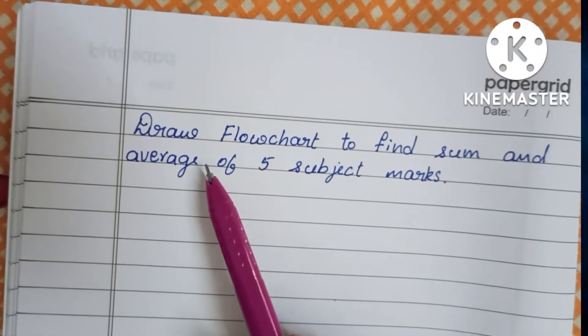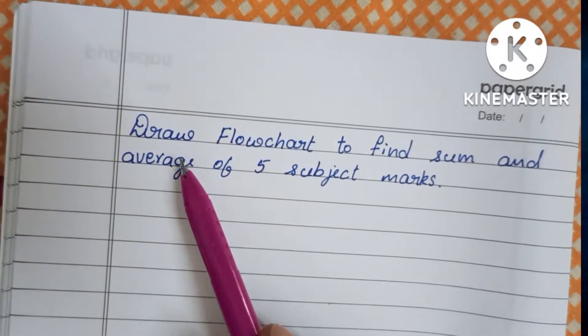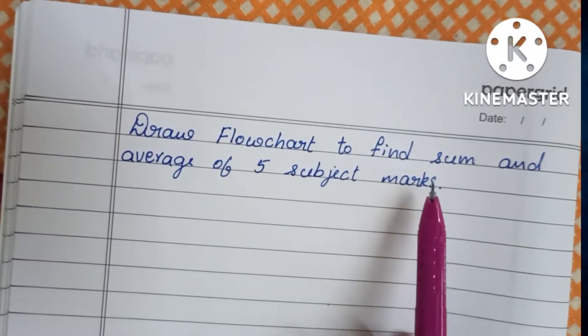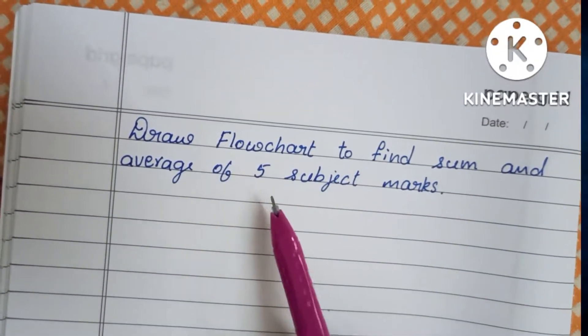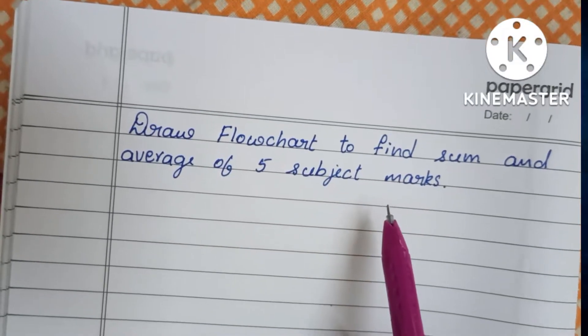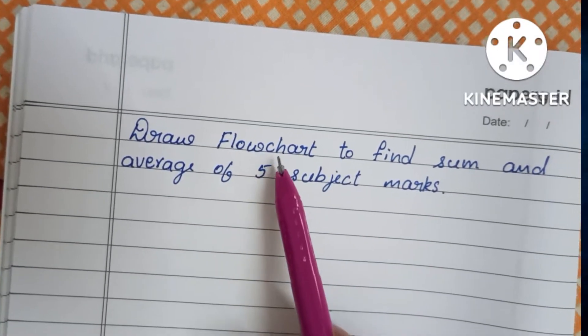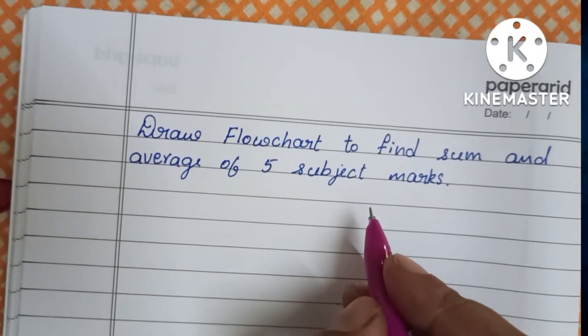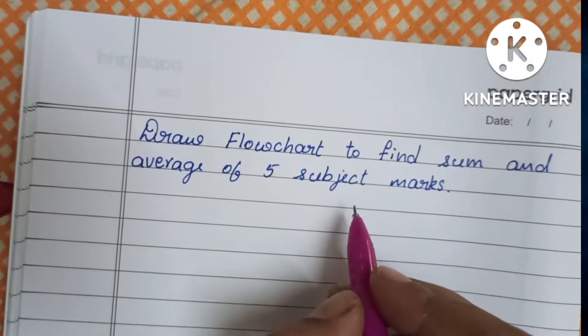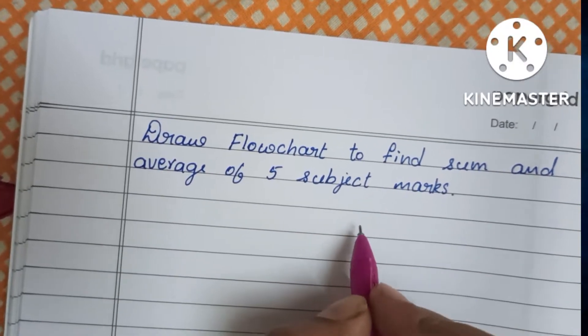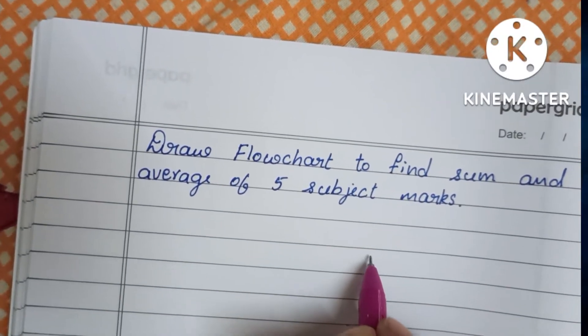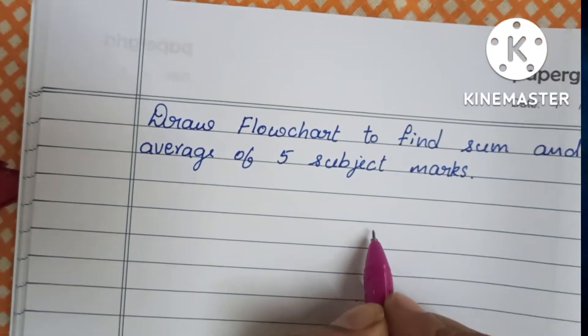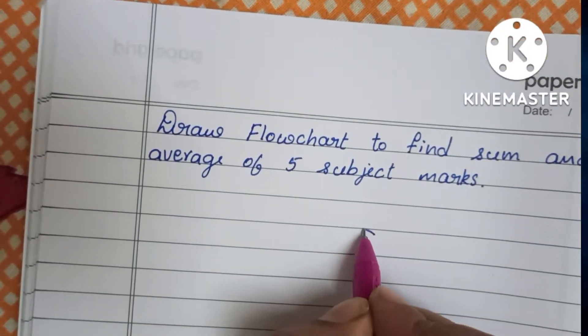In this video we're going to learn how to draw a flowchart to find the sum and average of 5 subject marks. A flowchart is a graphical representation of a solved problem. A flowchart always starts with the start statement.